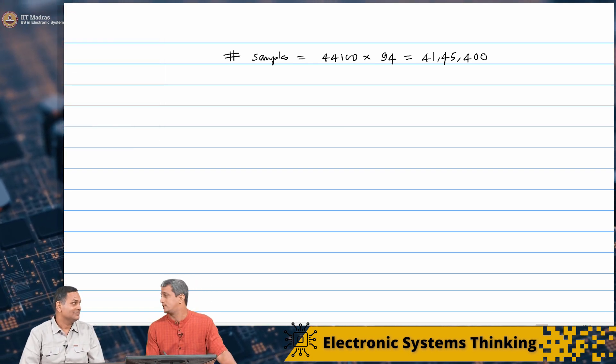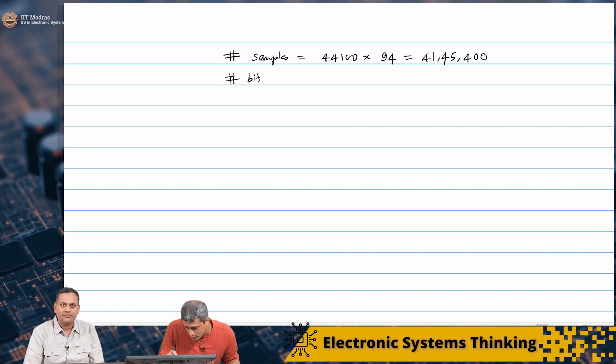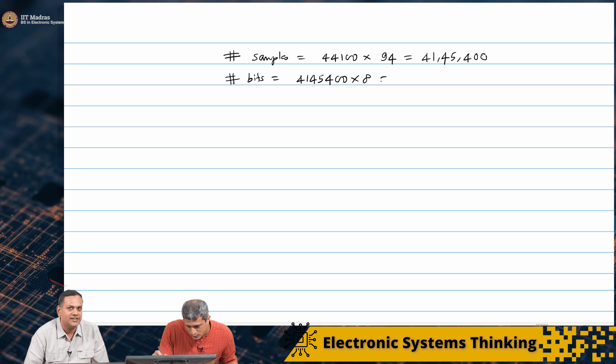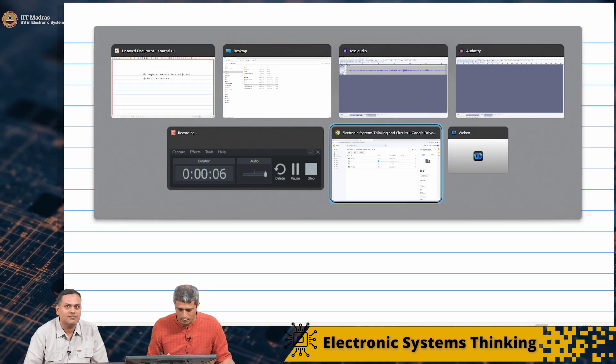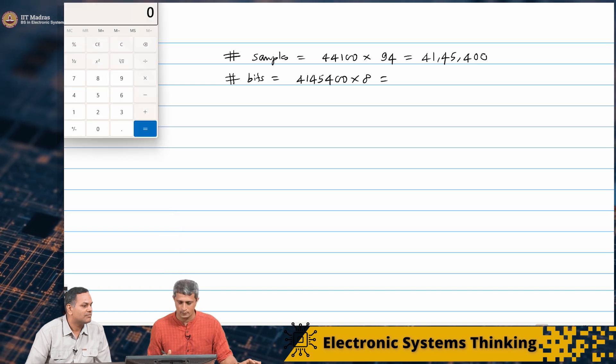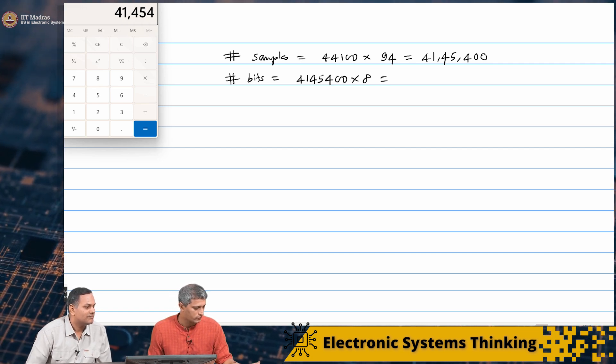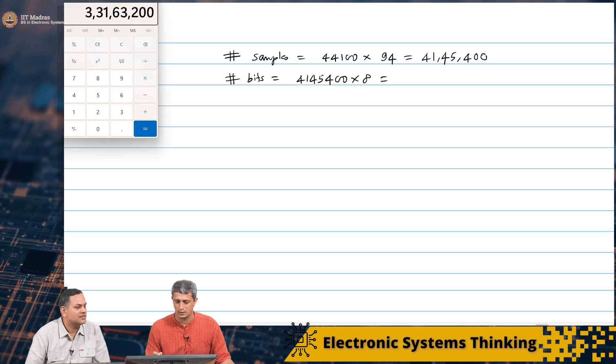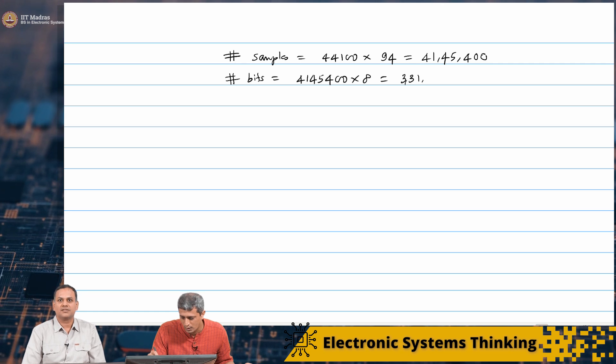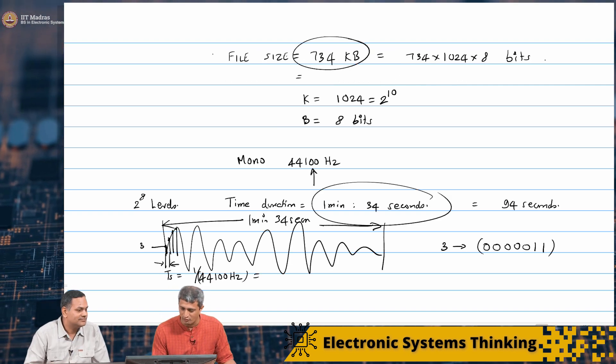Now each of these will be represented by an 8 bit number. Number of bits is 4,145,400 into 8. Oh I closed the calculator, sorry. 4,145,400 into 8. What do I get? 33,163,200. These many bits is what we have.